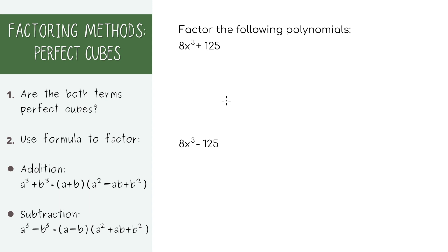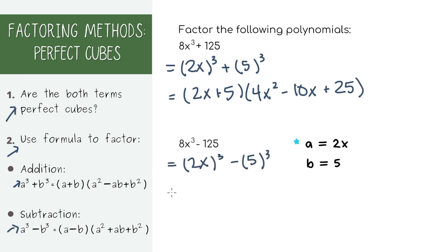In our first example, we're adding perfect cubes. We can use this formula and plug in the a and b values, and now it's factored. Just to do our last example, you can do the same thing if you're subtracting perfect cubes. Again, you'll just plug in the a and b values, but this time some of the signs are flipped, so you just have to pay attention to which one's positive and which one's negative, and this is the factored form.